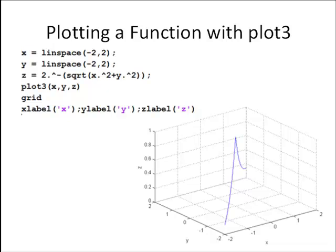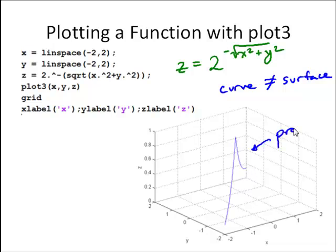We can also use plot3 to plot a curve that's represented by a function. So in this case, we can use that same function again. This is z is equal to 2 to the negative square root of x squared plus y squared. But now we're using plot3, and it plots this as a curve, not a surface. So this is an important distinction. Here, each value of x and y have one corresponding value of z. So we have this curve that actually looks like the profile of the cone surface that we looked at previously. And we'll look at how we can generate that actually with the surf command. So this is a key difference between plot3 and surf. Plot3 is always going to plot a line. If we want a surface, we need to use surf.